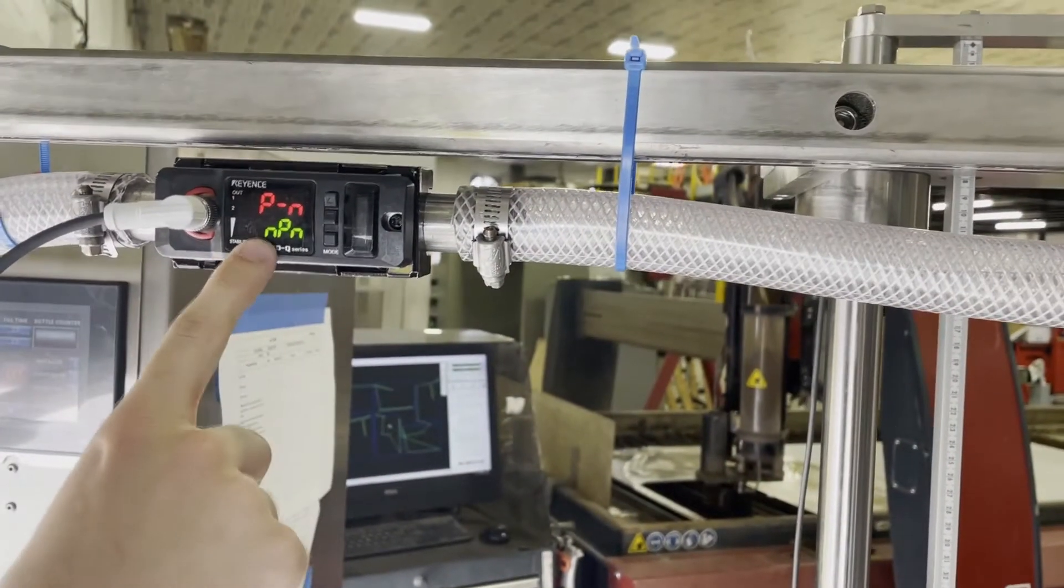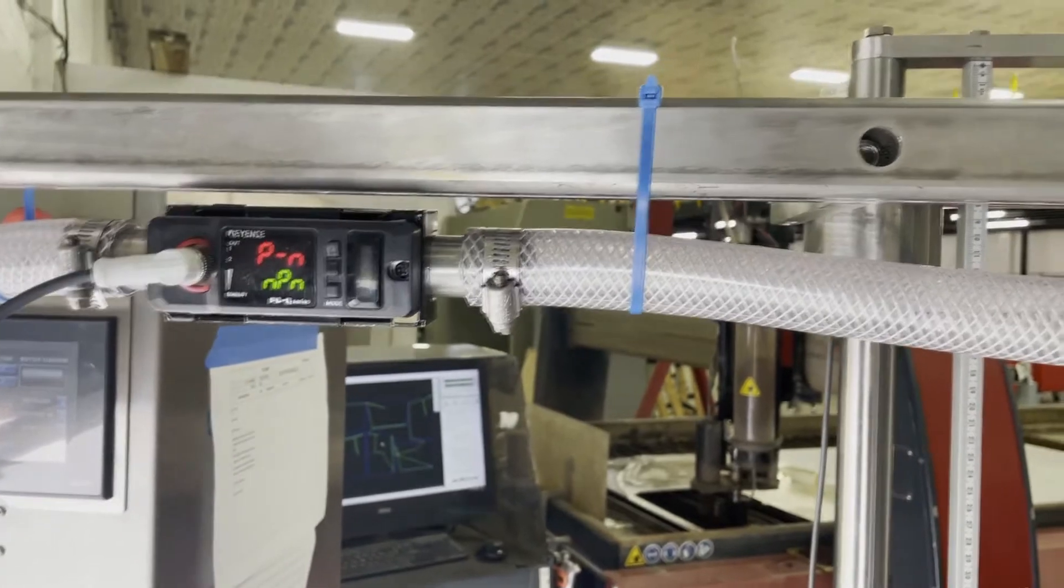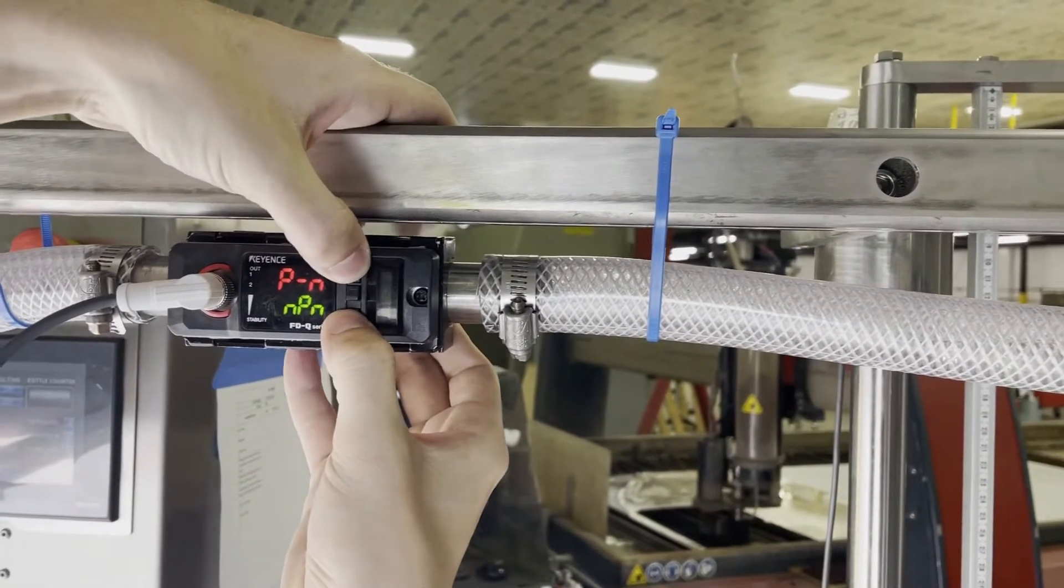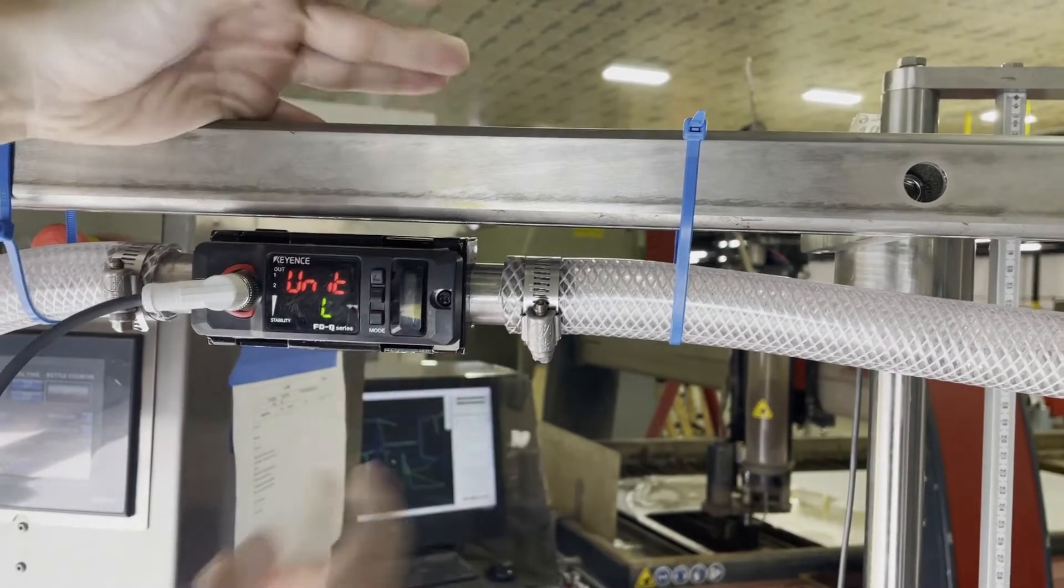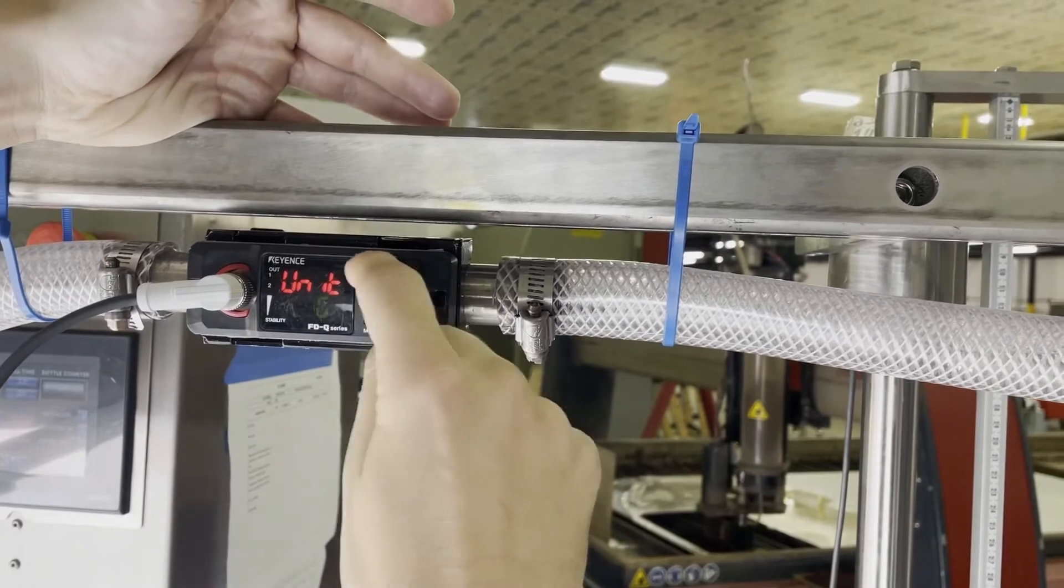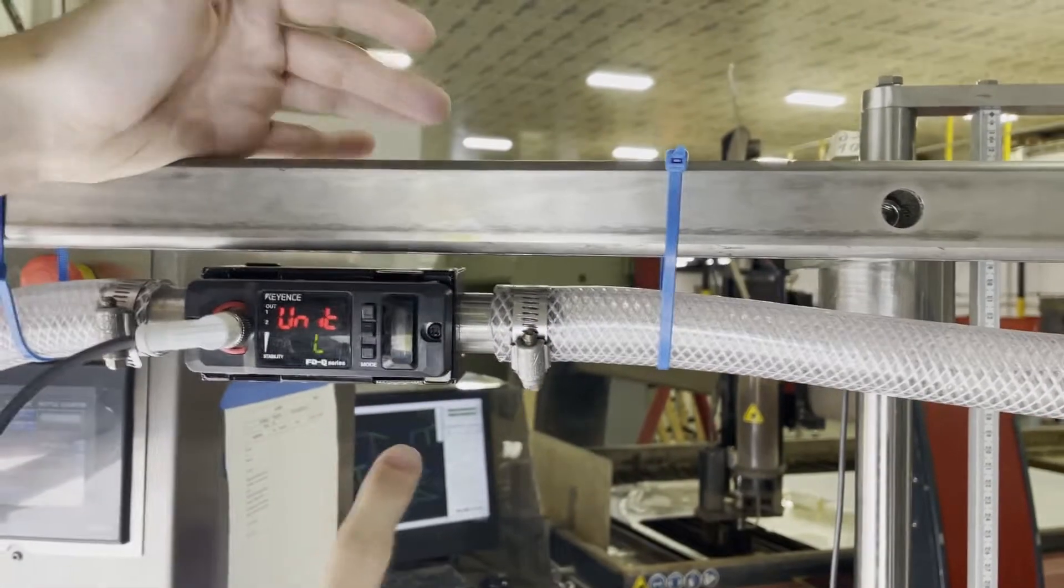So the moment you turn on, you've got NPN or PNP, but in order to change into liters, we're going to hold the mode and the up button together for about three seconds. You can see there holding that it says unit liters. If I press up, I can choose gallons, press up again and keep it in liters.